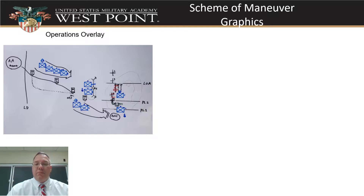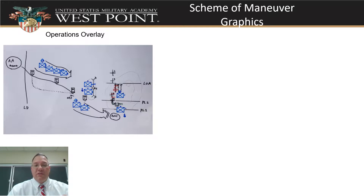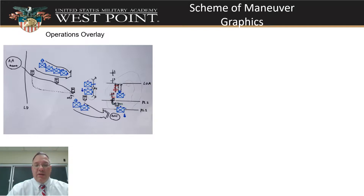There are two ways that we can approach doing our graphics for the Schema Maneuver. The first one is just a single operations overlay. Here's an example of what would go on that without the standard overlay information, to show what the operations overlay portion is. It's a single overlay that shows the entire mission from the assembly area through to actions on the objective.